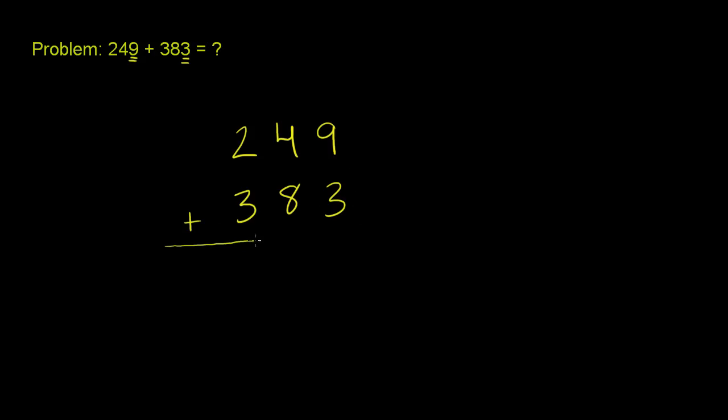Now I'll show you the process, but while we do the process, we'll think a little bit about why it makes sense. So we start at the ones place, and we say, what is 9 plus 3? So we say 9 plus 3, well that's equal to 12.